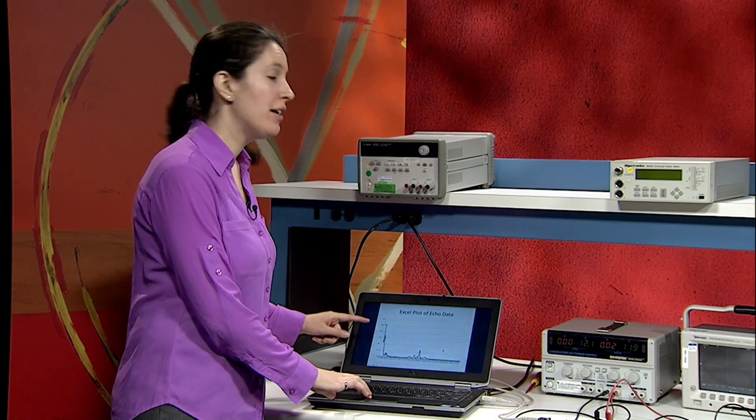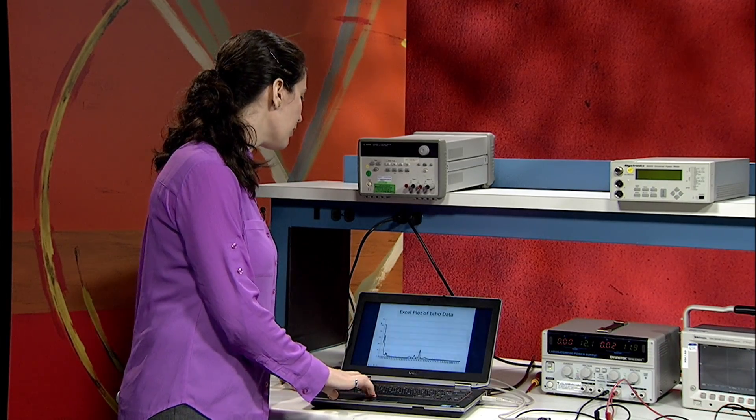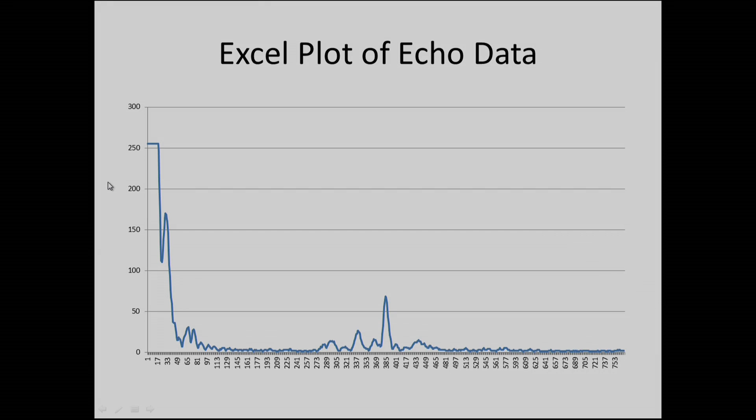Now I'm going to show you how to interpret your results. So I have here the Excel plot of the echo data. The x-axis is location in FIFO memory, and the y-axis is the amplitude.